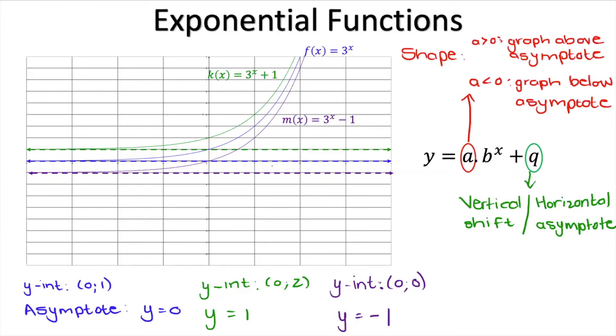This holds true no matter the value of b. If b is between 0 and 1, it will still simply shift the graph up or down. In grade 10, the q value will always represent your horizontal asymptote.